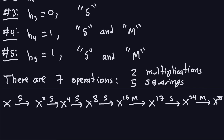If you look carefully at this sequence of squares and multiplies, you'll find out that this is exactly what you get — x to the 35. Square, square, square gets you to x to the 8; square again gives x to the 16; multiply by x gives x to the 17; square gives x to the 34; and multiply gives x to the 35.